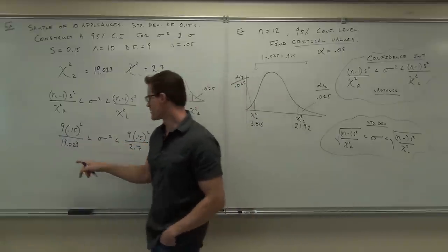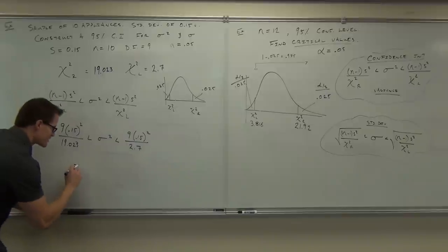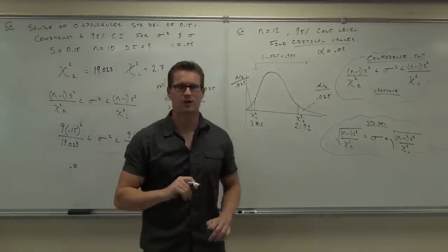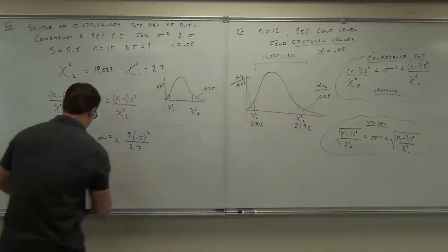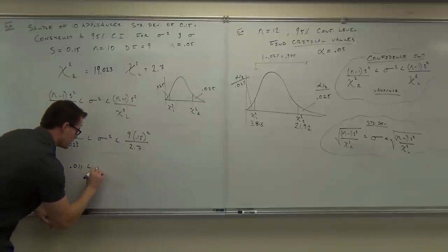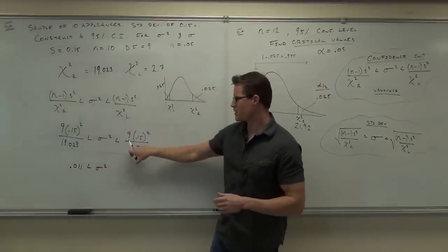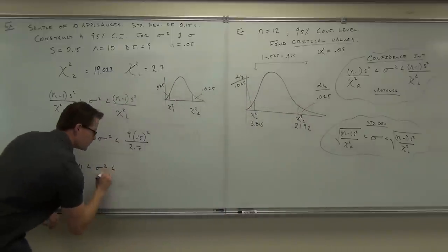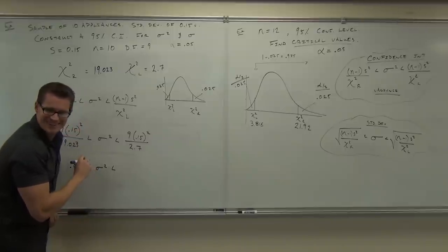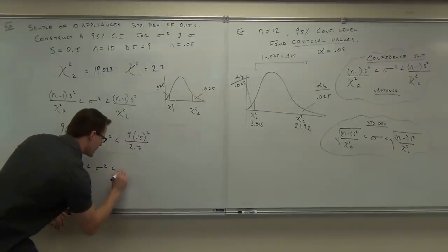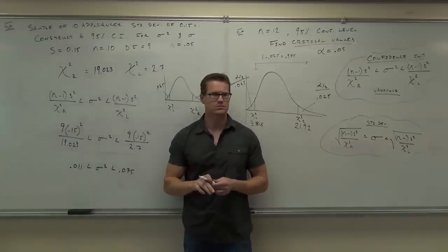Do the same process for your upper marker, dividing by 2.700 instead. The lower marker is 0.0106, and the upper marker is 0.075. Were you able to find those numbers? That's your variance interval — the variance ranges from 0.011 to 0.075.